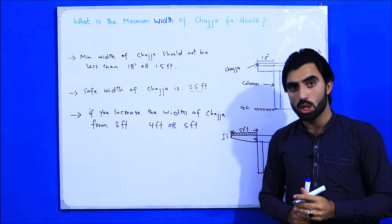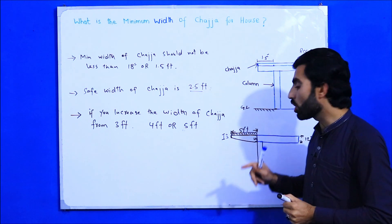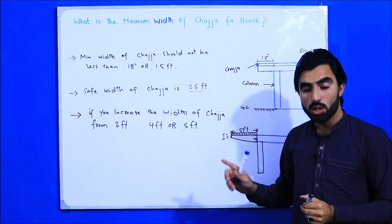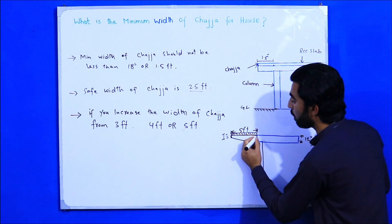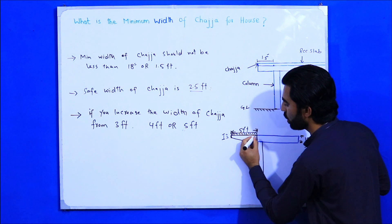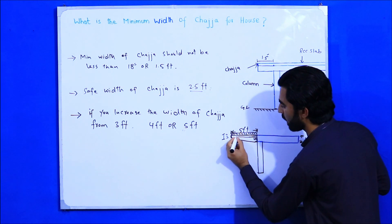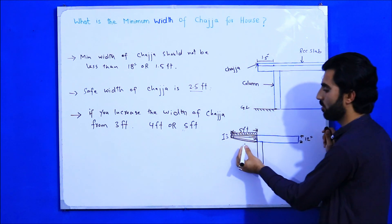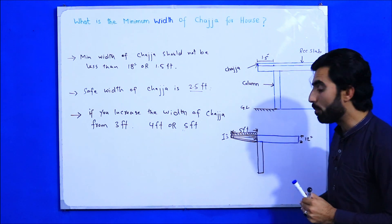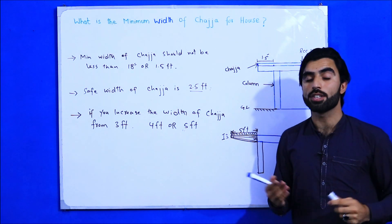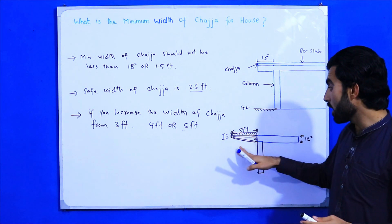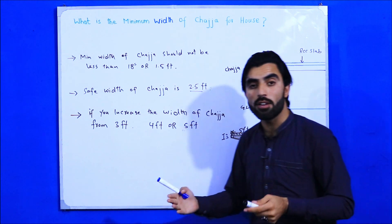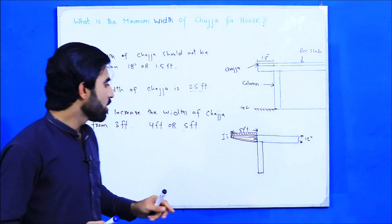If you keep the full 12-inch depth throughout, it becomes overloaded and cannot support the chadja. The steel bars should also be bent up at the end — the steel will be bent like this — and then your chadja will be safe. You can increase the width to five feet, five-and-a-half feet, or six feet, but you must apply these design points.